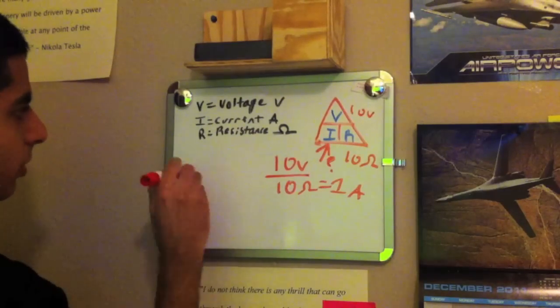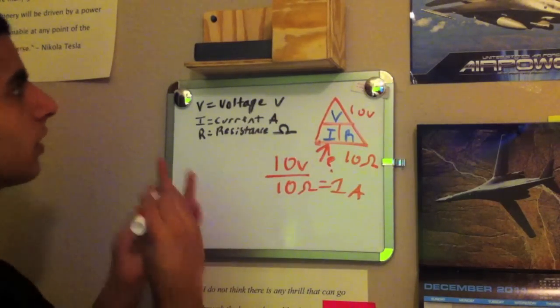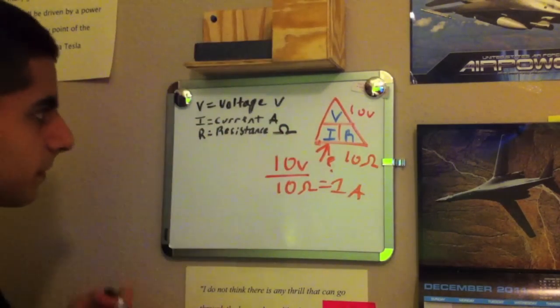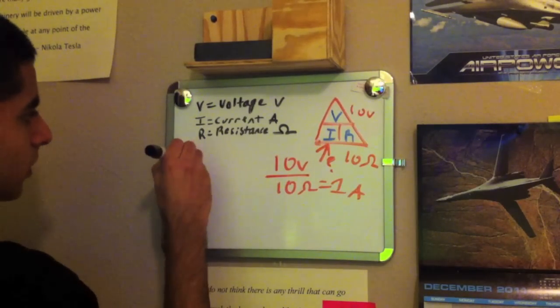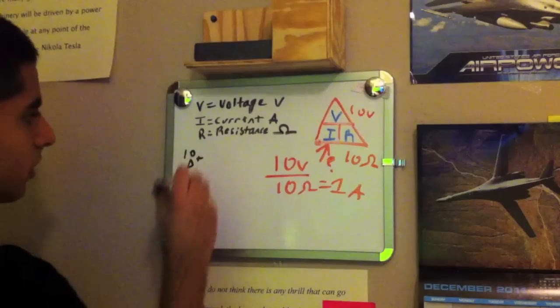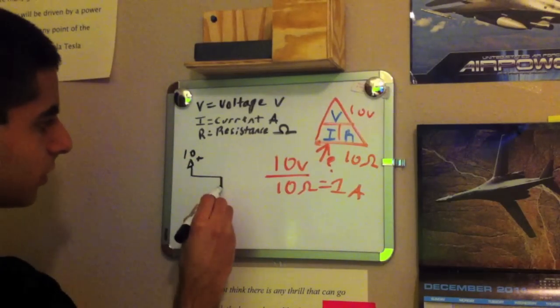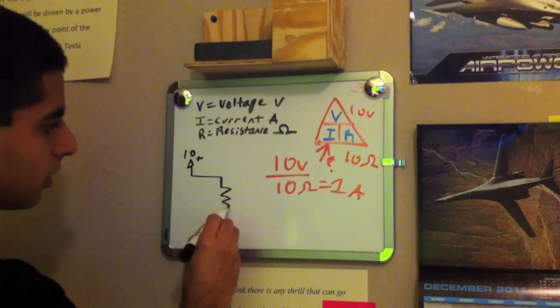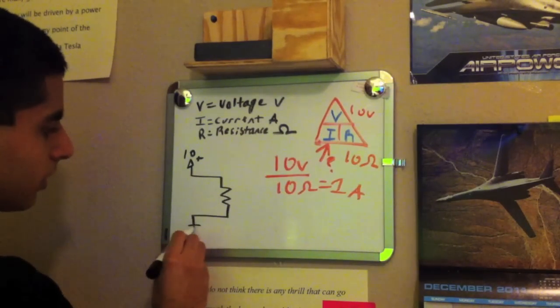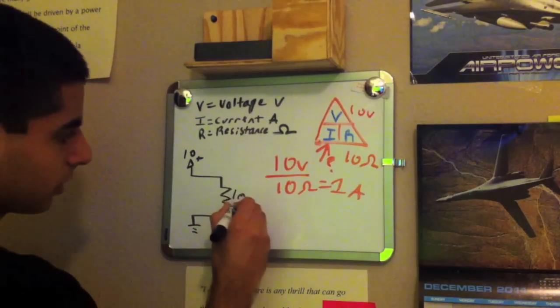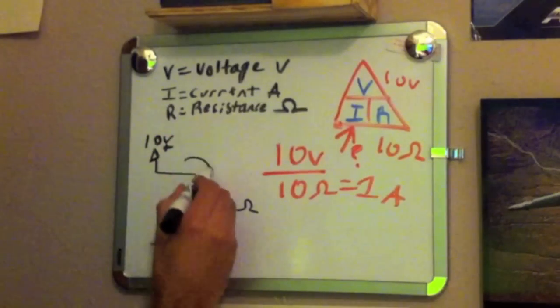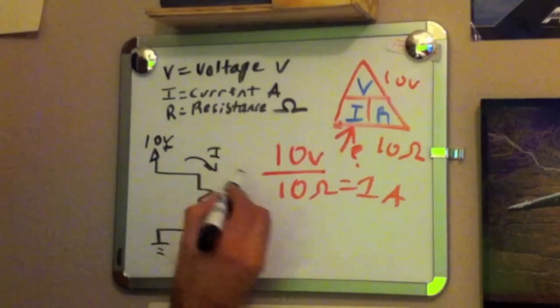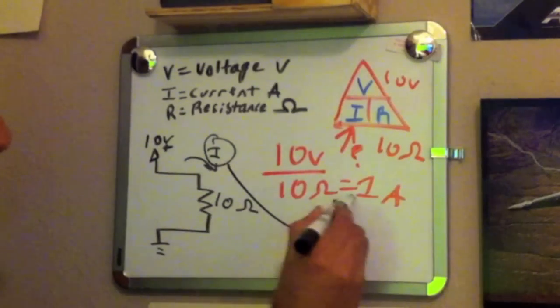So, the circuit would probably look something like this. You have 10 volts coming in, you have a resistor, and you have ground. This is 10 ohms. Our voltage is 10 volts. We want to find current, and current is going to be 1 amp.